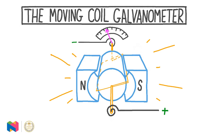In this video we're going to be looking at a device known as a moving coil galvanometer. The moving coil galvanometer is a fairly simple but very useful device which is used to measure electrical currents. It can be used to make ammeters, voltmeters, and ohmmeters, which are used to measure currents, voltages, and resistances in circuits. In this video we'll take a look at how moving coil galvanometers work and how we can calculate their sensitivity.